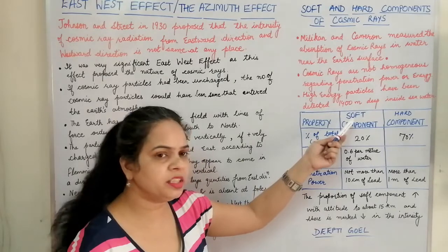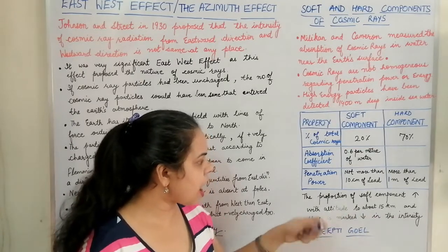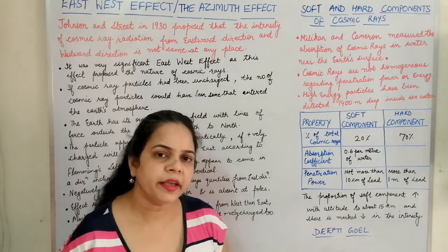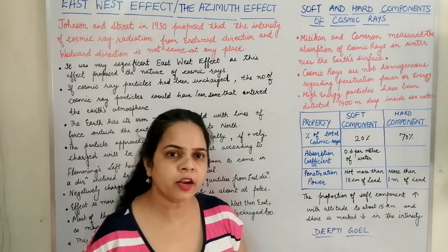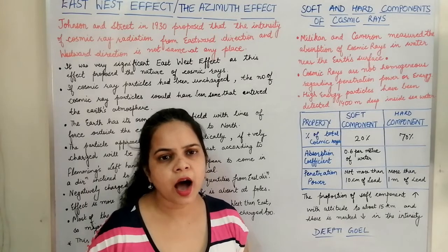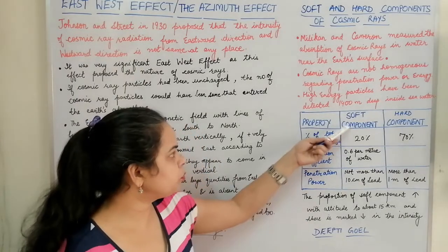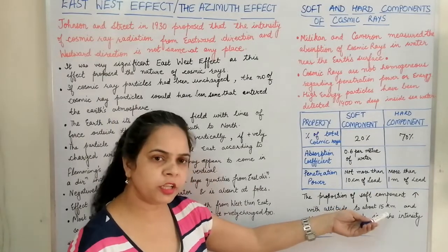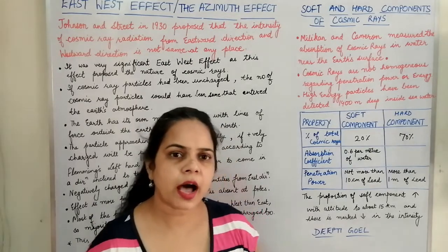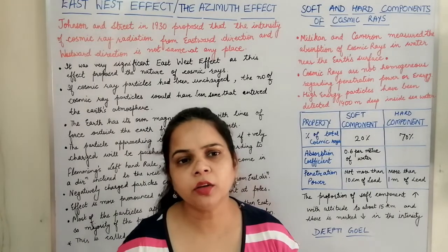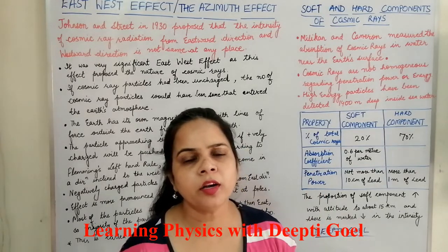The proportion of the soft component increases with increase in altitude up to about 15 kilometers, and after 15 kilometers there is a decrease in the intensity of the soft component. This is the same curve pattern observed in the altitude effect, where cosmic ray intensity increased to a height of 20 to 25 kilometers and then decreased. The same pattern is observed for the soft component. This completes the discussion of the altitude effect, latitude effect, east-west direction effect, and the basis on which cosmic rays are divided into soft and hard components.